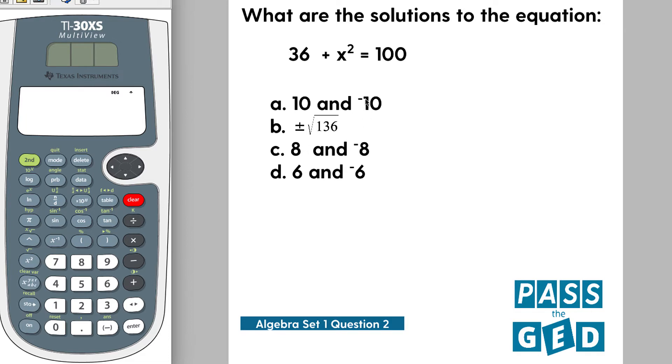With this x squared, we're likely going to have to find the square root of something. So if we rewrite this, we've got 36 plus x squared equals 100.